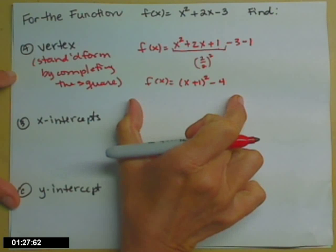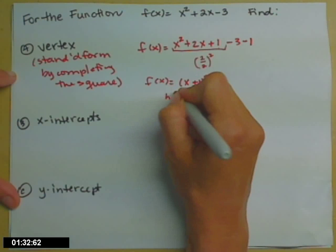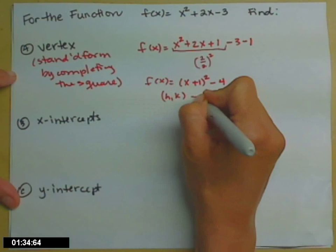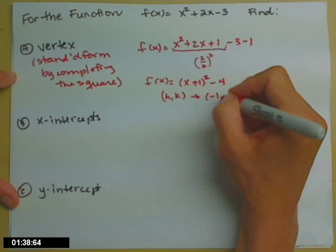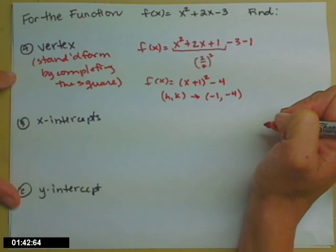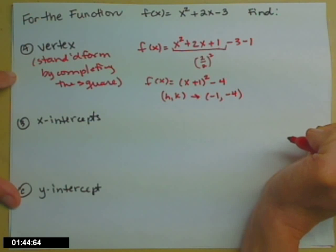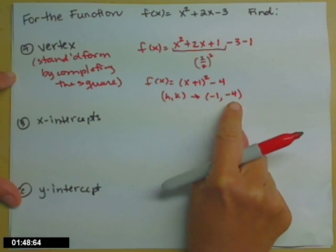Now I have that quadratic function in standard form, so I can read off the vertex. So the vertex, remember it gets the letters h, k. Negative 1, change the sign inside, keep the sign outside. Negative 1, negative 4. Now we know where we've moved it, which you'd get from before. Left 1, down 4. This is left 1, that's down 4.